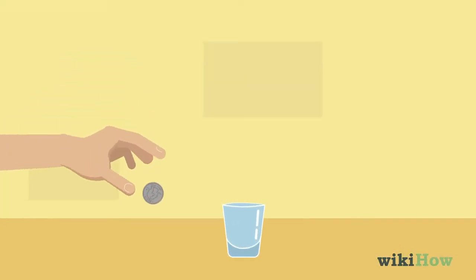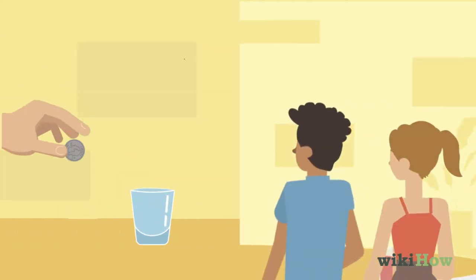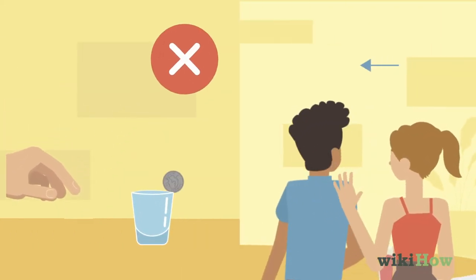The first player tries to bounce a quarter into the glass. If they miss, the player to their left goes next.